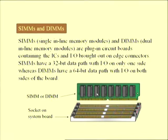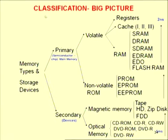SIMMs are Single Inline Memory Modules and DIMMs are Dual Inline Memory Modules. The memory classification tree: primary memory can be volatile (registers, cache, RAM) or non-volatile (ROM). Secondary storage includes magnetic memory (zip disk, floppy disk, hard disk) and optical memory (CD-ROM, DVDs).